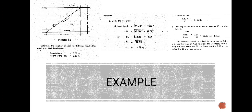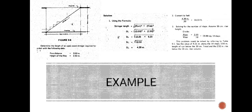Here is an example of how to solve for stringers. Given: run distance = 3.5 m, height of rise = 2.5 m. Using the formula: stringer length = √(run² + rise²) = √(3.5² + 2.5²) = 4.3 m. Then convert to feet as needed. To solve for the number of steps assuming an 18 cm riser height: number of risers = 2.5 ÷ 0.18 = 13.88, which rounds up to 14 steps. A table is then used to complete the solution.